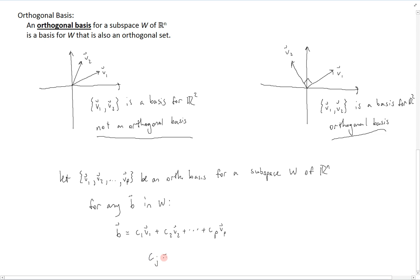Each Cj is equal to B dot Vj divided by Vj dot Vj. And this holds for all J from 1 through P. We will see in a later video why this holds, but for now, let's see how this makes things easier.